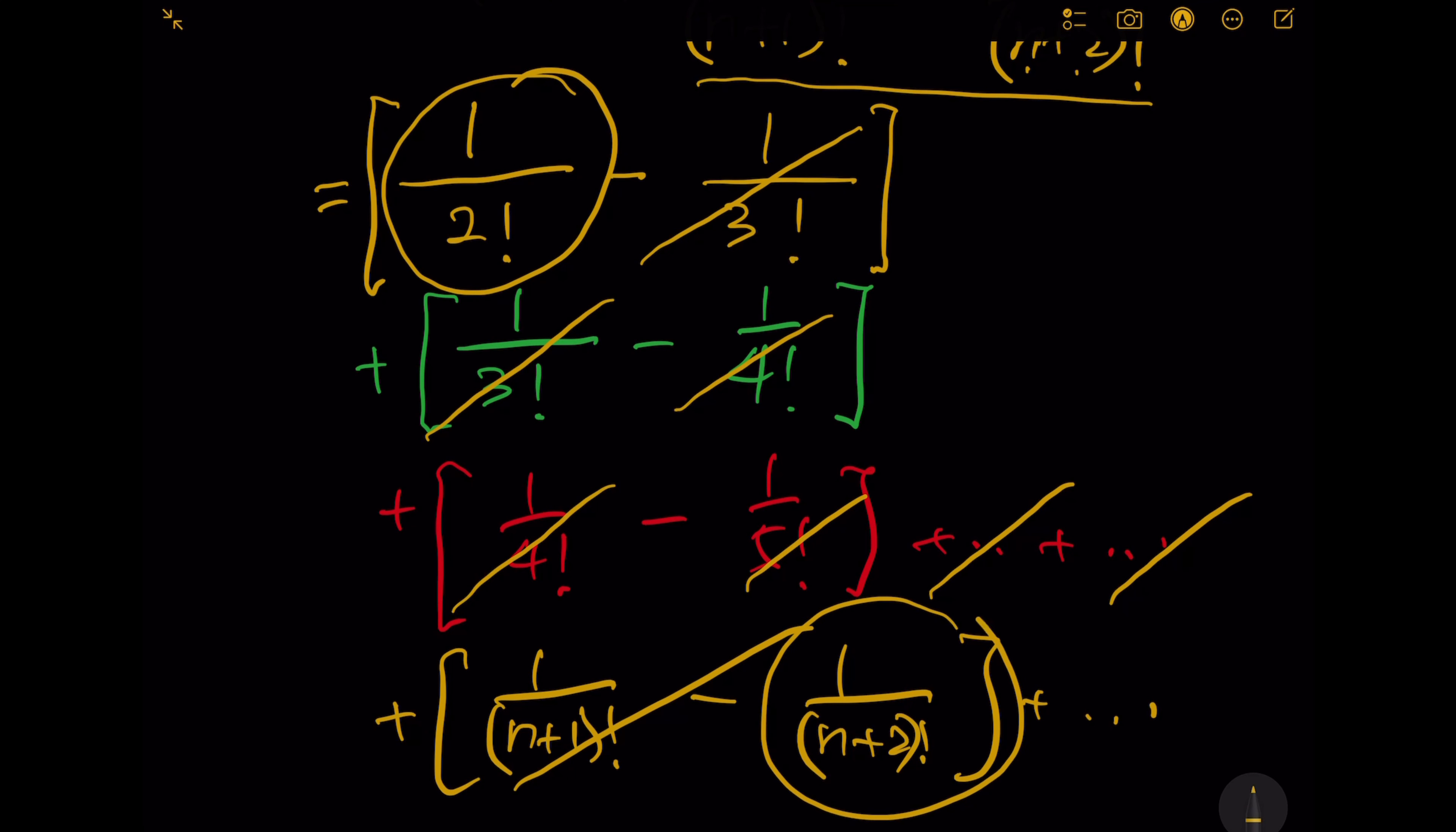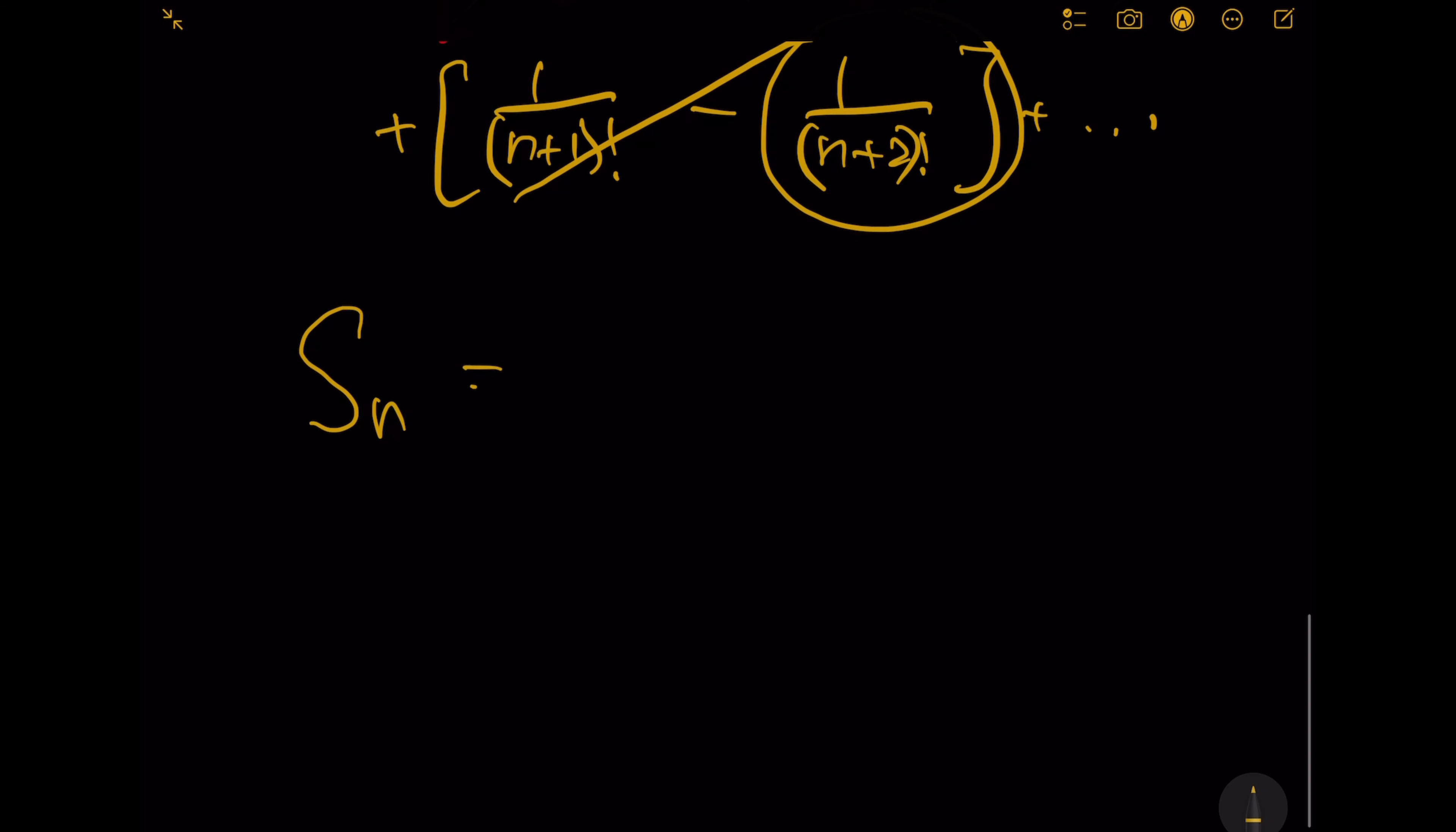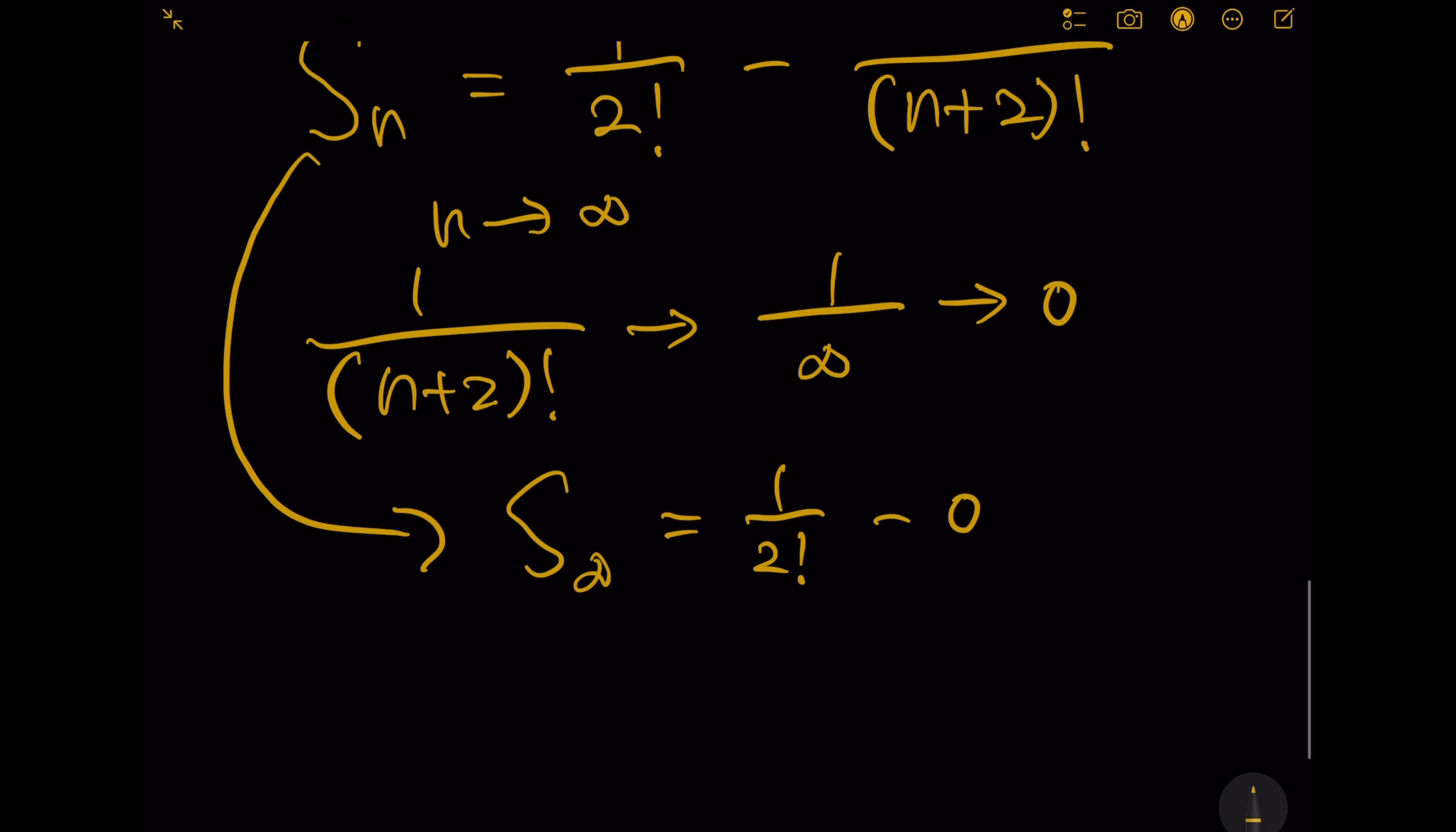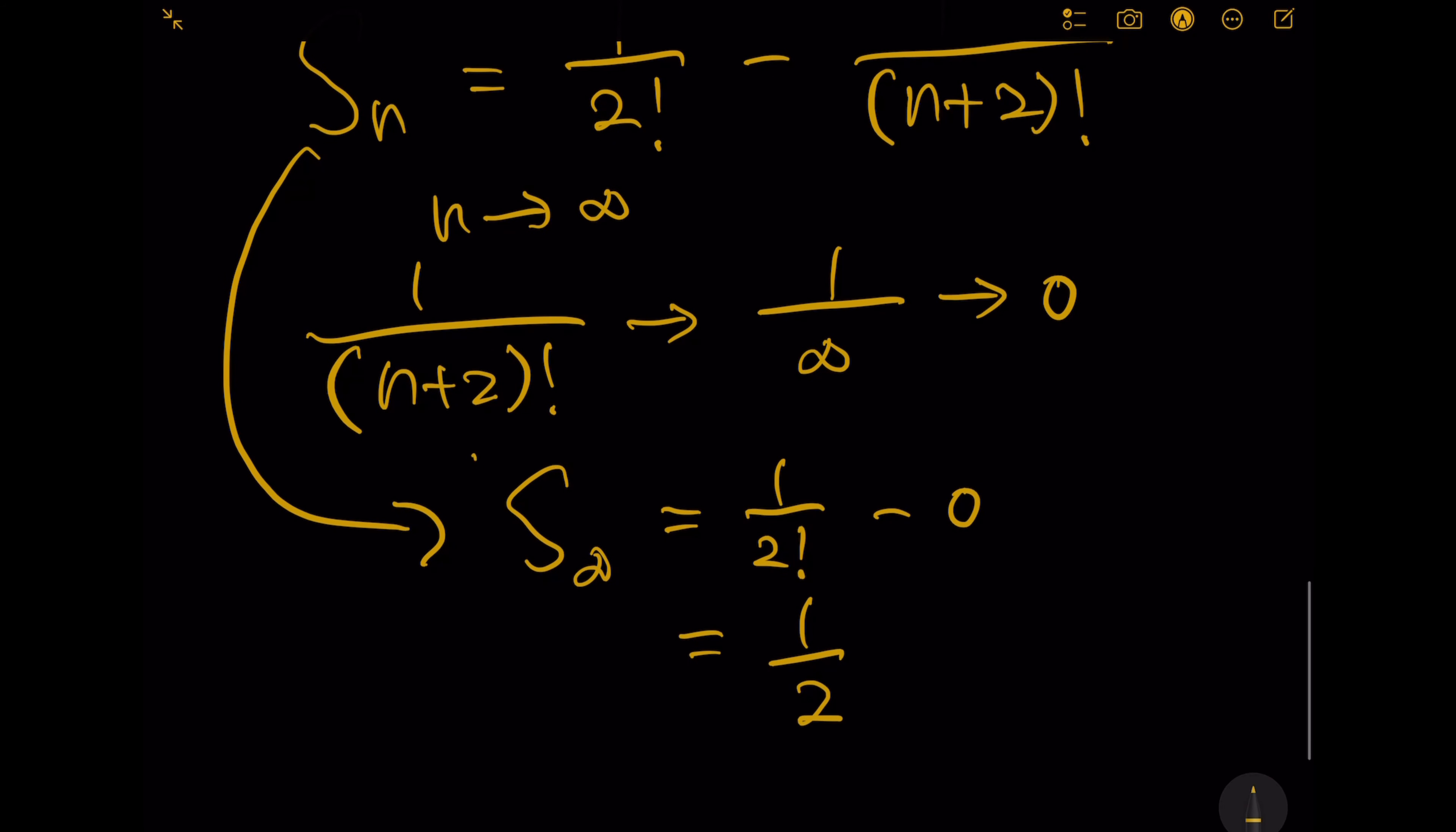So S_n is 1 over 2 factorial minus 1 over n plus 2 factorial. Now n goes to infinity. Therefore, 1 over n plus 2 factorial goes to 1 over infinity, which is 0. So as a conclusion, S infinity is 1 over 2 factorial minus 0, which is 1 over 2. And here is our final answer.